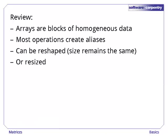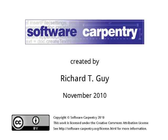To review, arrays are blocks of homogenous data. They are less flexible than lists, but operations on them are much faster. Most operations create aliases rather than copying values. Arrays can be reshaped in various ways, all of which leave the overall size the same, or they can be resized. In the next episode, we'll have a look at how we can select values from arrays.